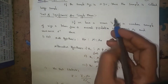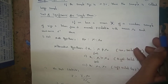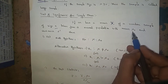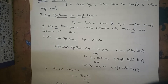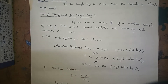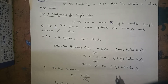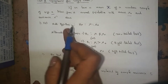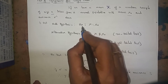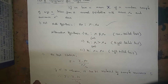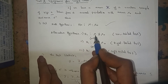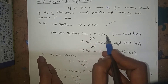If we have a sample mean x-bar of a random sample of size n, taken from a normal population with mean mu naught and variance sigma squared, then we set the null hypothesis H₀: mu = mu naught. The alternative hypothesis H₁ is mu ≠ mu naught.